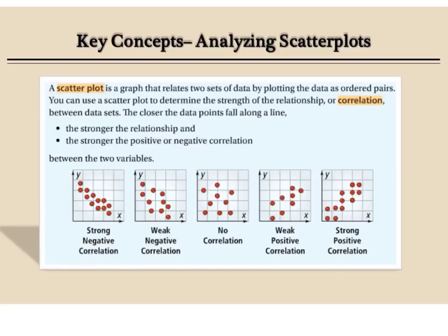If you notice, these points are going down in a pretty tight line. That is a strong negative correlation. These are going down, but they're not real tightly knit, close knit, so it's a weak negative correlation.